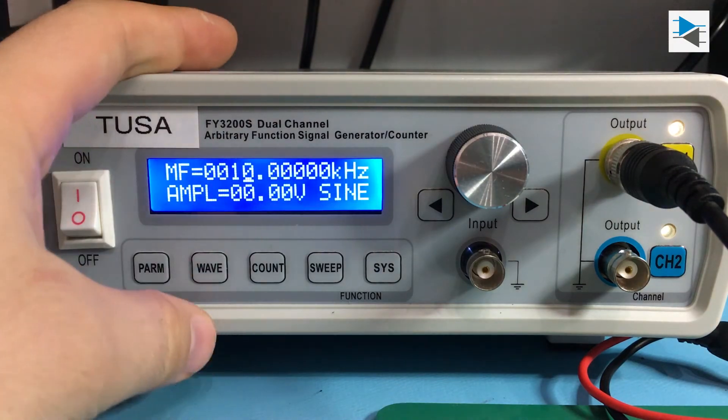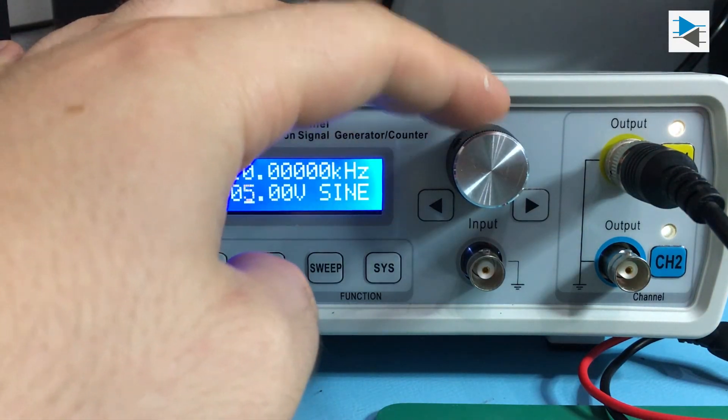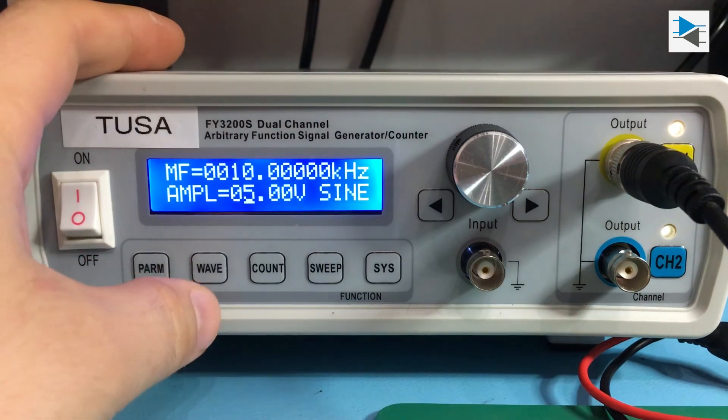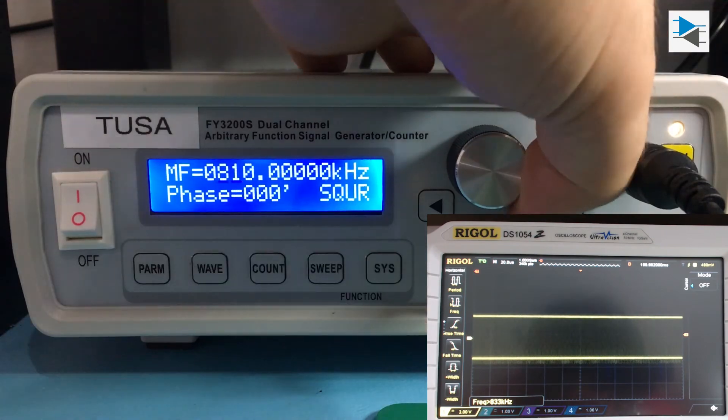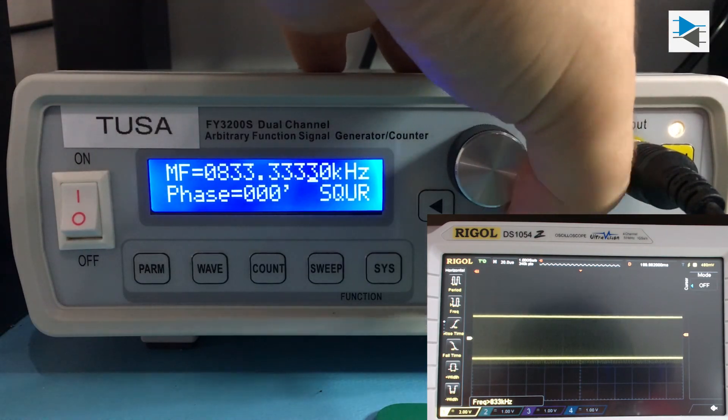But back to our main story at night. We start by setting the output voltage to 5 volts. Then we change the waveform to square wave and adjust the frequency to the 833 periodic kilohertz that we calculated earlier on.